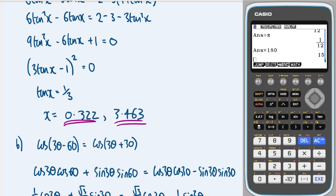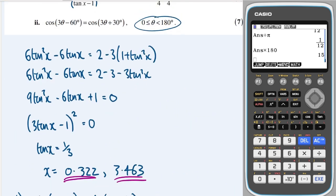And just checking the range again, it's up to 180. Okay, so it's up to 180, so that means that 3θ is up to 540.